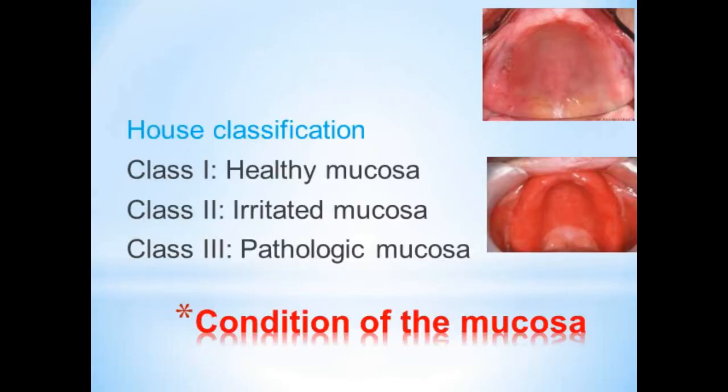First let us examine the condition of the mucosa, which is classified by House as healthy mucosa, irritated, and pathologic mucosa. Healthy mucosa is light pink in color, exhibits no sign of injury or irritation, and usually has a thickness of 1 to 1.5 millimeters with an adequate keratin layer, evenly distributed over the ridge. In some cases you can see irritated mucosa — fibrous or hyperplastic mucosa — in cases of ill-fitting dentures, excessive wear, bruxism, allergy, or systemic conditions.